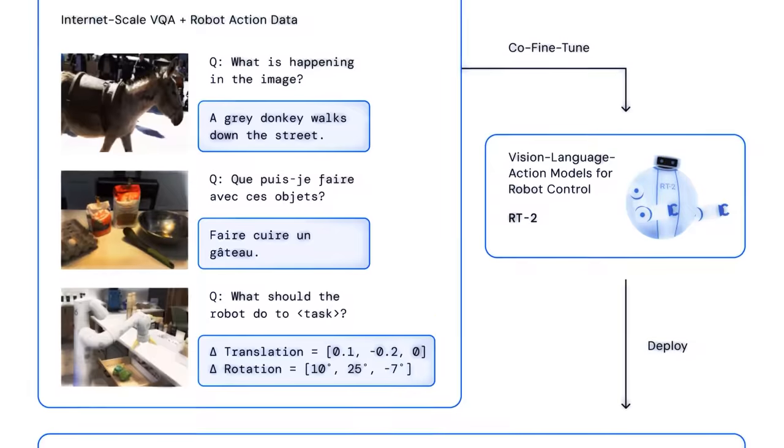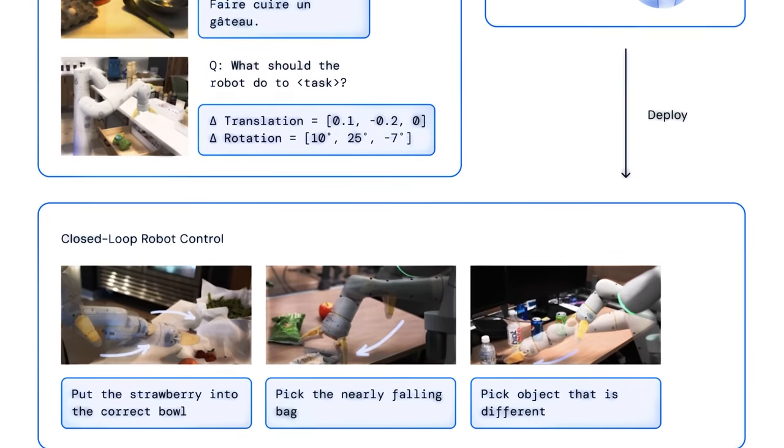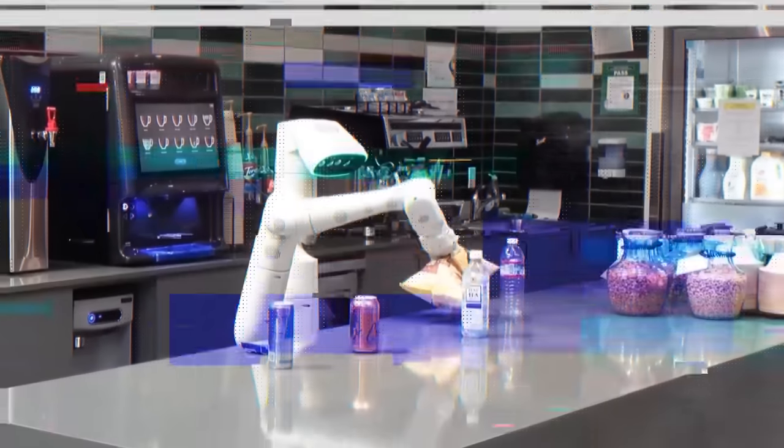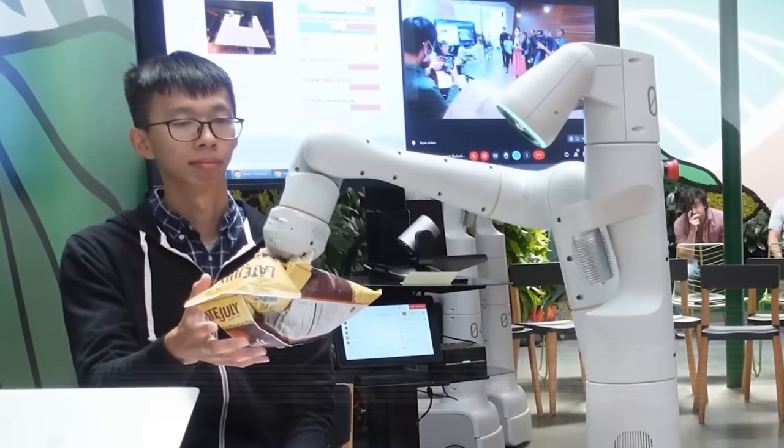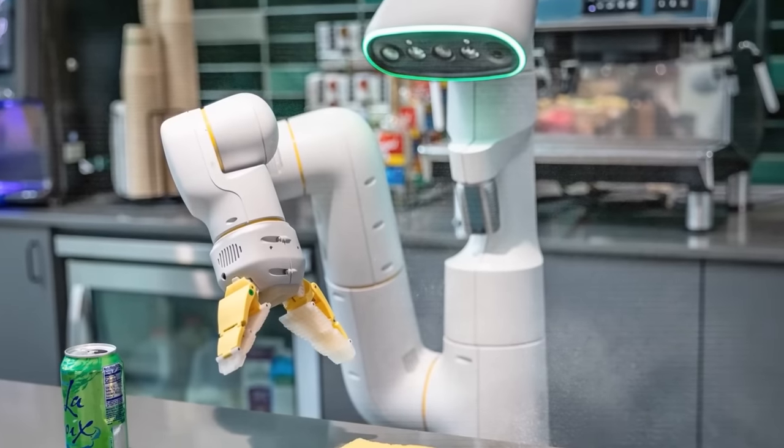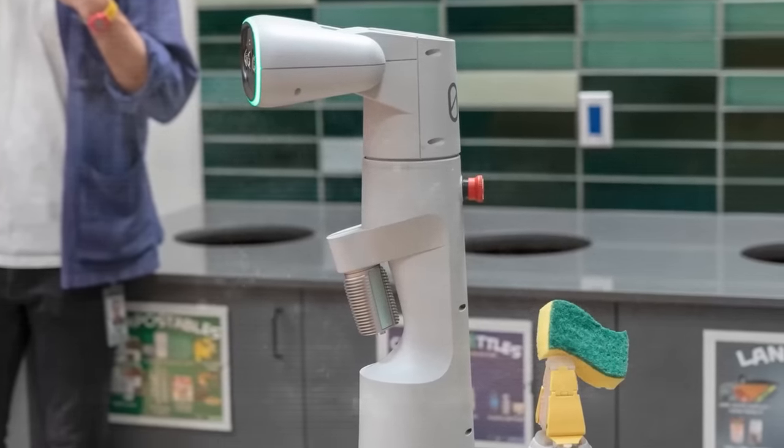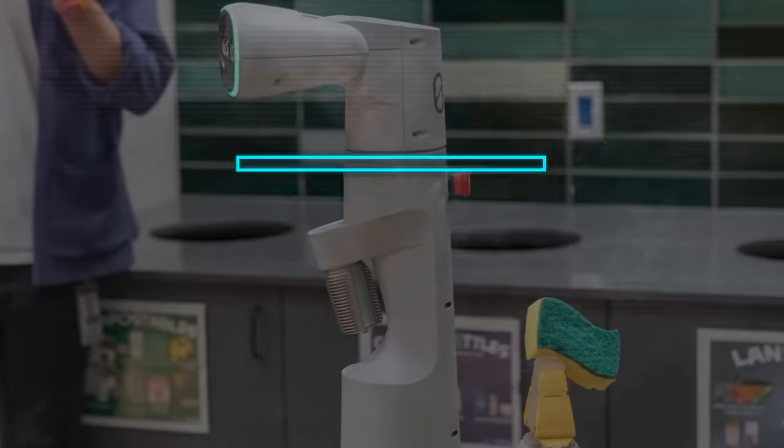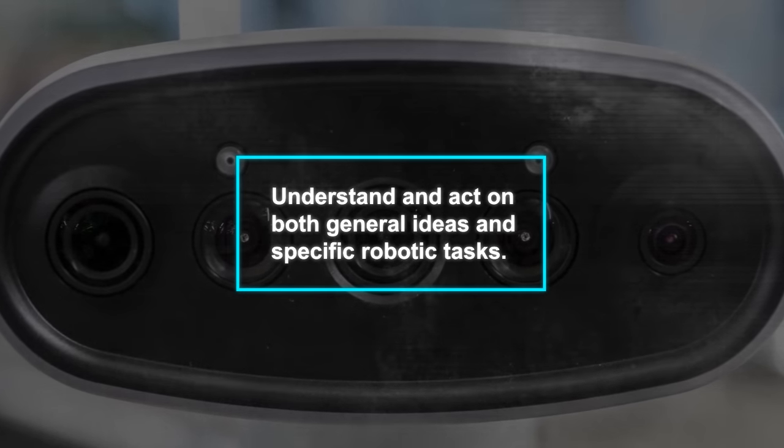An example of such an instruction might be moving to a specific position and opening a part of the robot a certain amount. RT2 learns from both general online data and specific robot training. It has been trained with data from 13 robots doing tasks in an office kitchen over 17 months. This training helps it understand and act on both general ideas and specific robotic tasks.